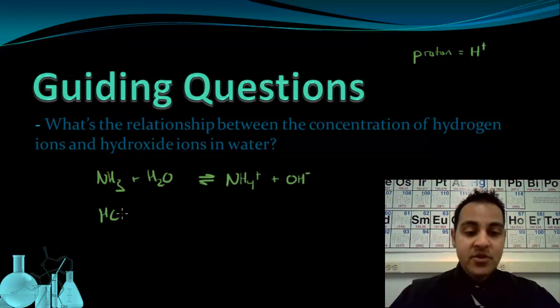An example of an acid we looked at was HCl. When HCl was placed in water, it acted as a Bronsted-Lowry acid because it donates a proton to the water. So the water molecule picks up the extra hydrogen ion, the extra proton, and becomes H3O+.